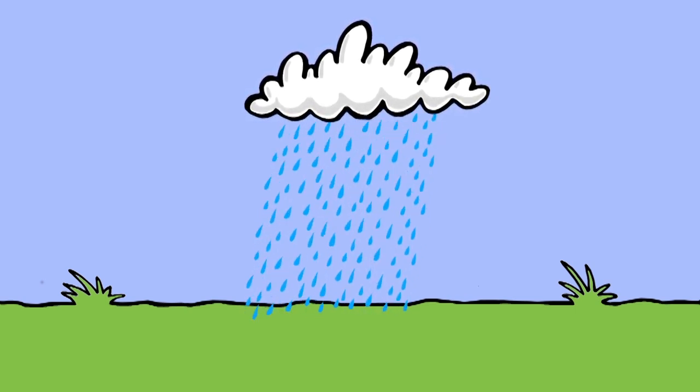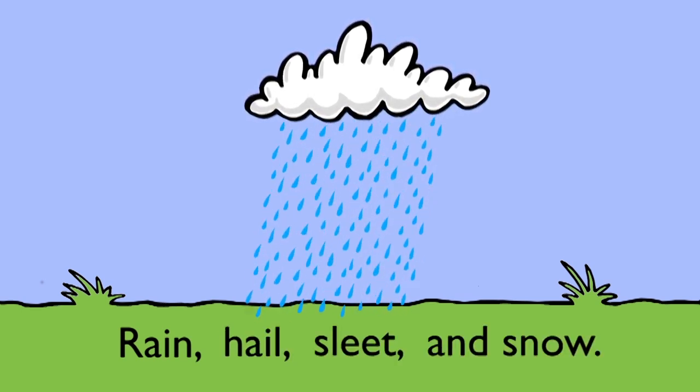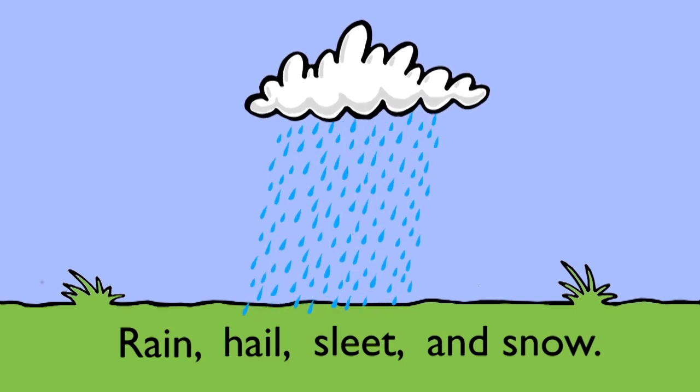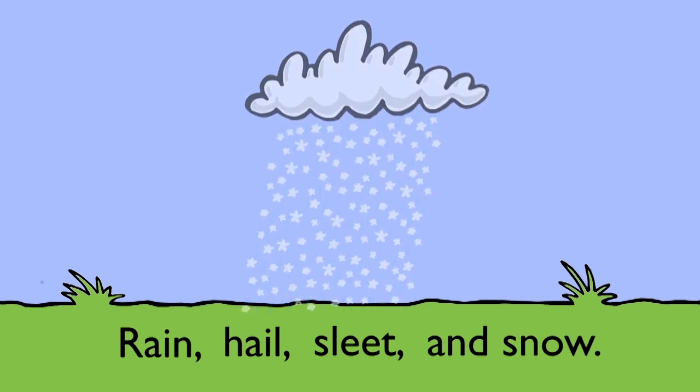The correct answers include rain, hail, sleet and snow. For those of you who live in warmer climates, hail is condensed, irregular ice crystals. Sleet is a term used to describe a mixture of snow and rain.